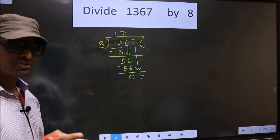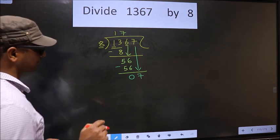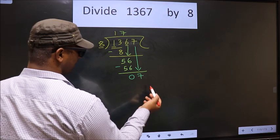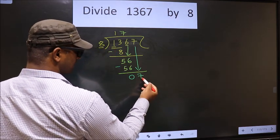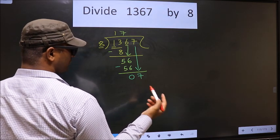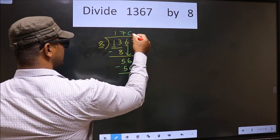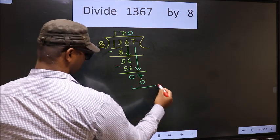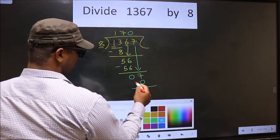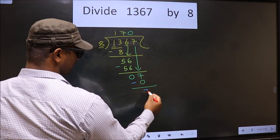Instead, what you should think of is what number should we write here. If we write 8 here, that is larger than 7. So what we do is we take 0 here. So 8 into 0, 0. Now you subtract. 7 minus 0, 7.